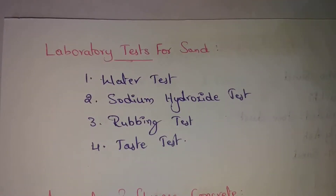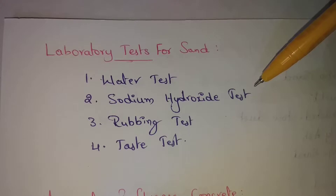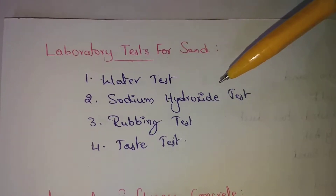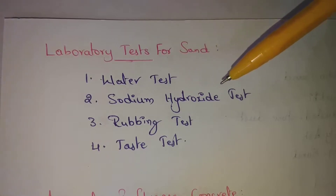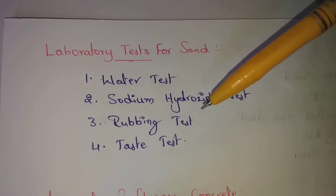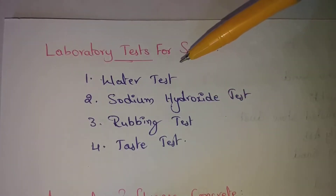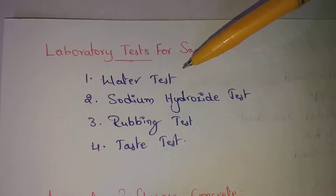Next topic: laboratory tests for sands. There are four main tests. First, the water test. Second, the sodium hydroxide test, also called caustic soda test. Third, the rubbing test. Fourth, the taste test. We will explain all four in detail.